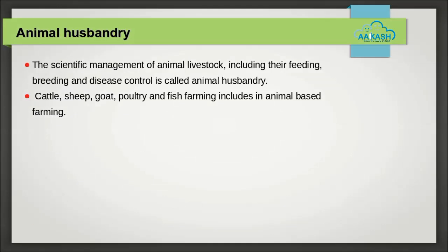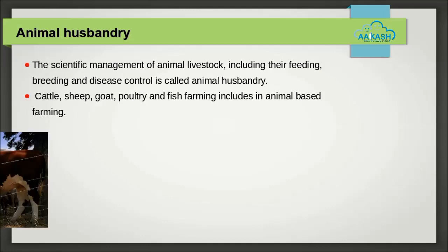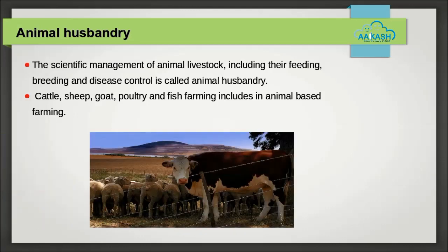Animal husbandry: the scientific management of animal livestock, including their feeding, breeding, and disease control, is called animal husbandry. Animal farming includes cattle, sheep, goat, poultry, and fish farming.